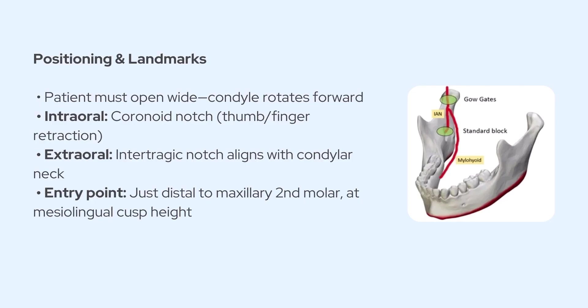Technique-wise, a successful Gow-Gates block really starts with good patient positioning. The patient has to open wide and just keep it open the whole time — not just for comfort, but because it's actually essential. When the mouth is wide open, the condyle rotates forward, which brings the mandibular nerve into a more accessible spot. If your patient can't stay open comfortably, definitely consider using a bite block or a mouth prop.